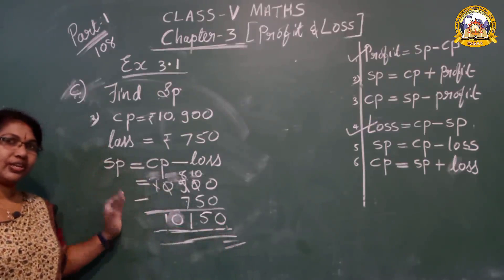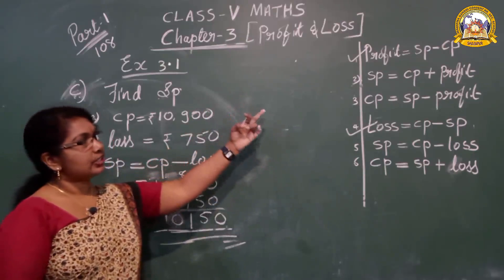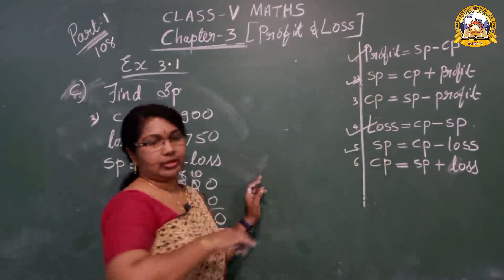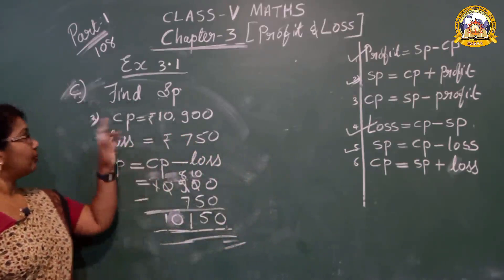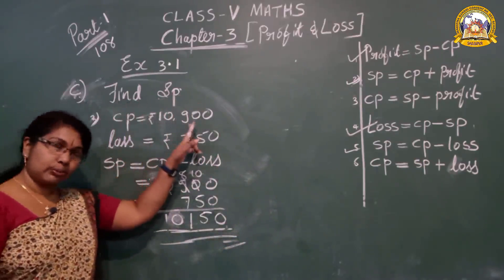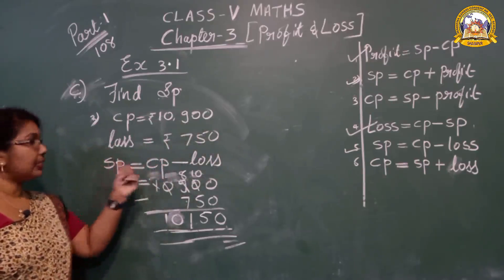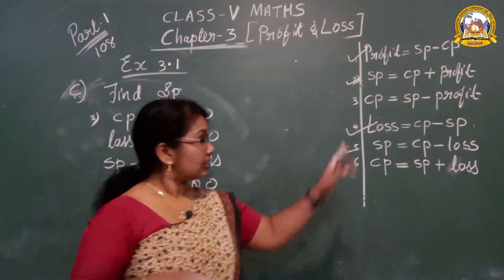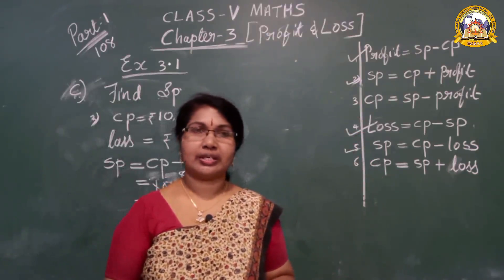Now how many formulas have we studied? Four. First: profit formula. Second: loss. Third and fourth: SP formula — finding SP when there is profit, and finding SP when there is loss. When profit is given, add: CP plus Profit. When loss is given, subtract: CP minus Loss. Okay students, these six formulas you should write in the classwork and learn them. See you in the next class. Bye.